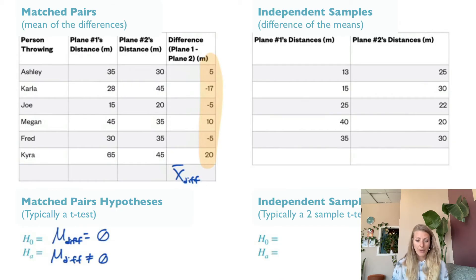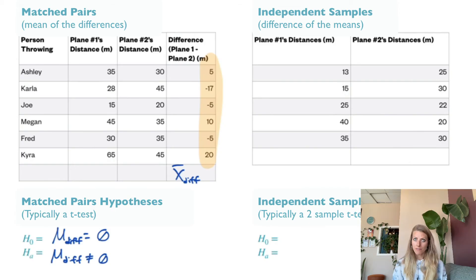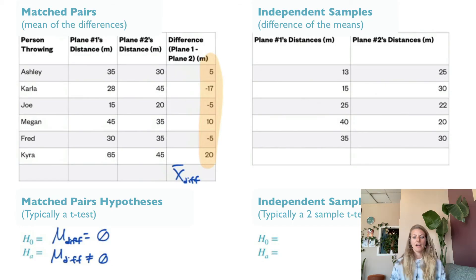In that case, you would have a null hypothesis that — typically, not always — the mean of the differences is actually zero, because we assume nothing exciting is happening. We assume the null hypothesis is that both planes are the same. The alternative hypothesis, since we haven't been led one way or the other, is that they're different — that the mean of the differences is not zero. So you're only calculating one sample mean: the mean of the differences.